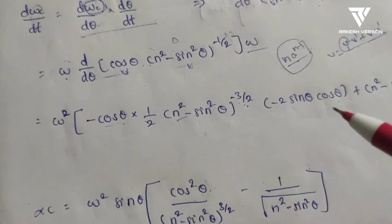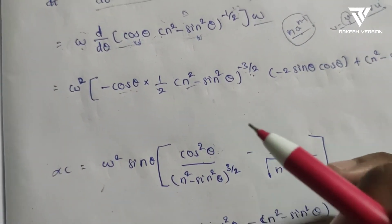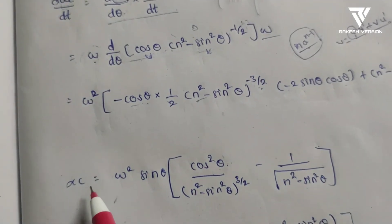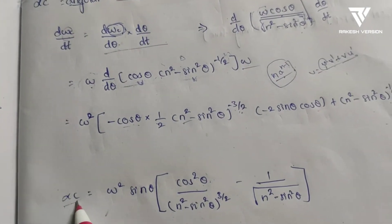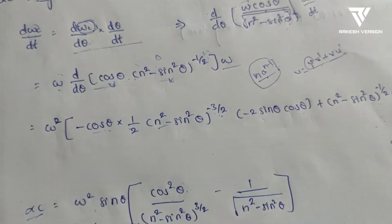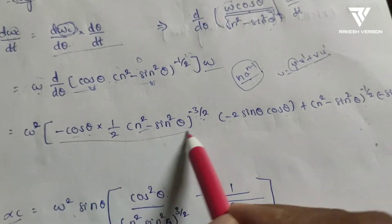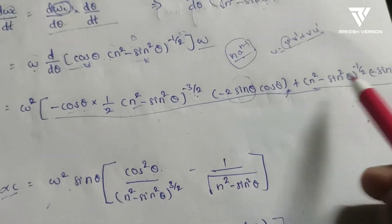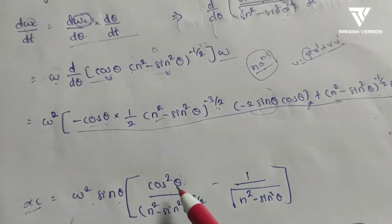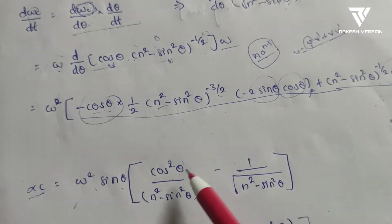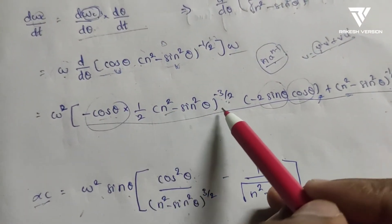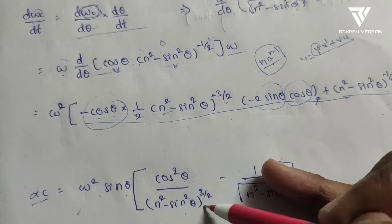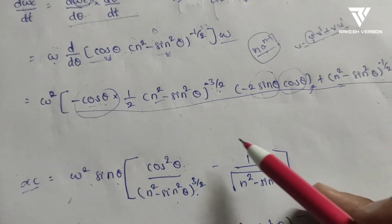After simplification, sin θ is taken as common from the two terms. cos θ multiplied by cos θ gives cos²θ. The negative powers are rewritten as denominators, so (n² − sin²θ)^(−3/2) becomes 1/(n² − sin²θ)^(3/2). Taking LCM of the two resulting terms gives (cos²θ − (n² − sin²θ)) in the numerator.